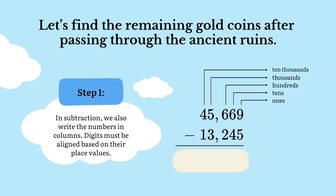In subtraction, we also write the numbers in columns. Digits must be aligned based on their place values. Then subtract starting from the ones place to the ten thousands place to get the answer.